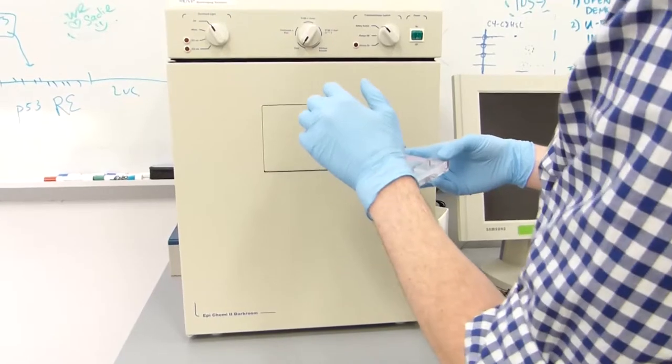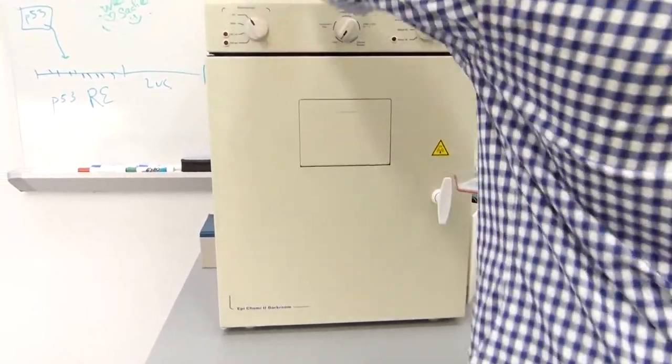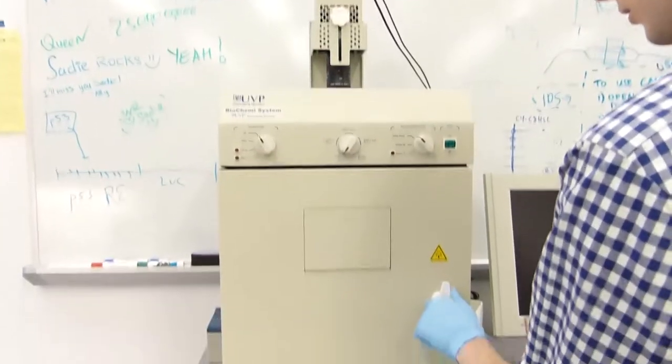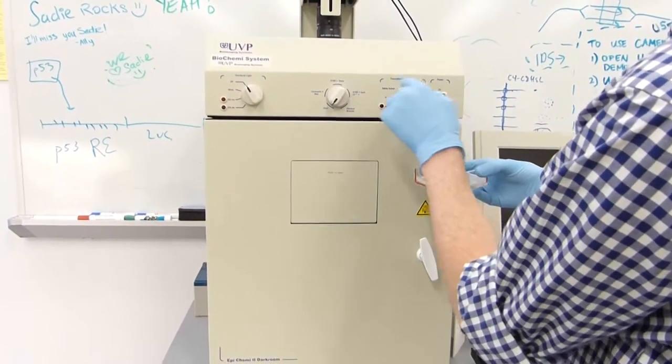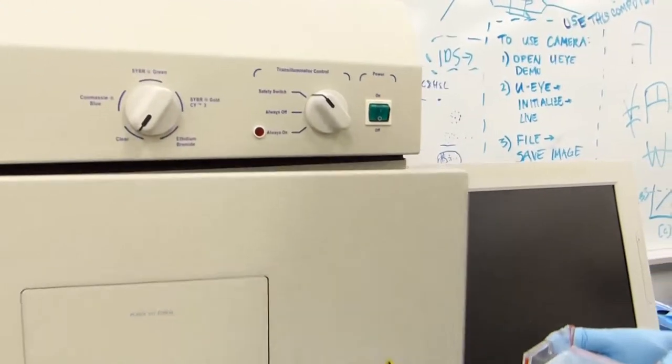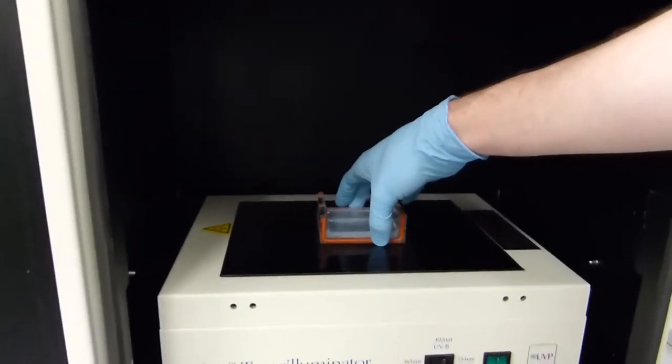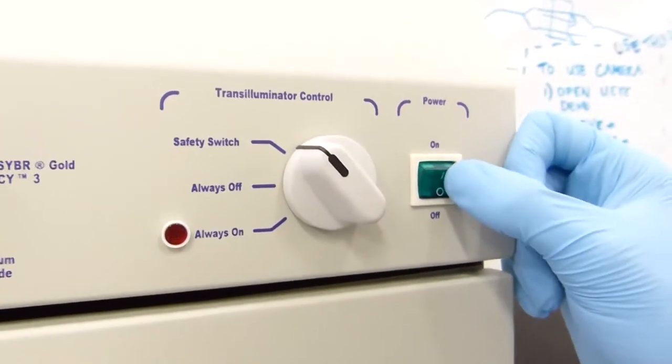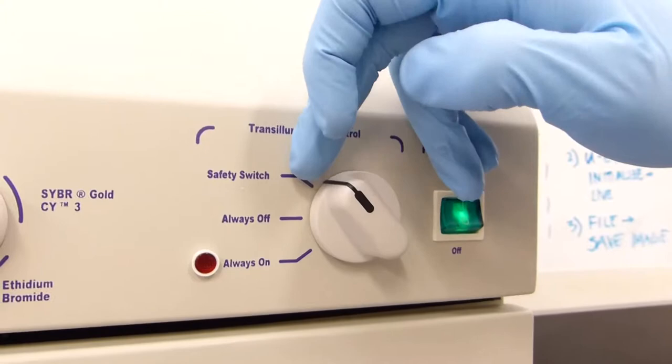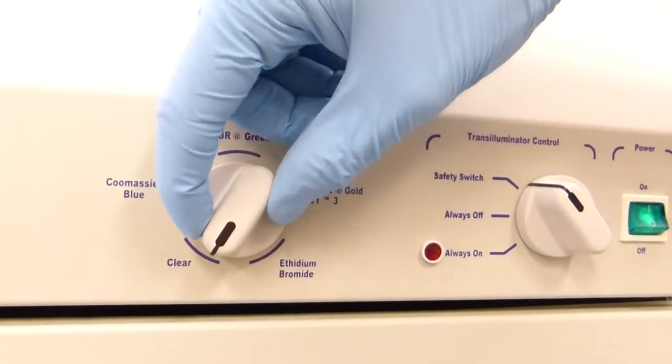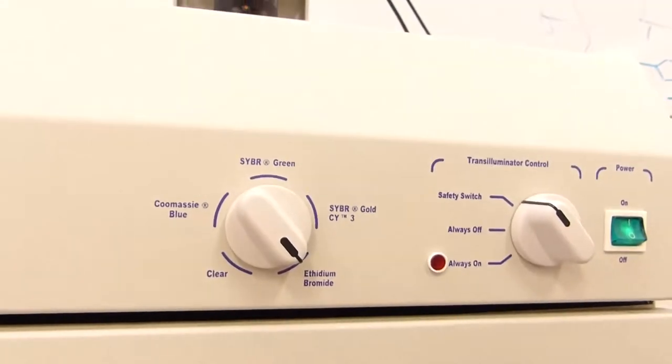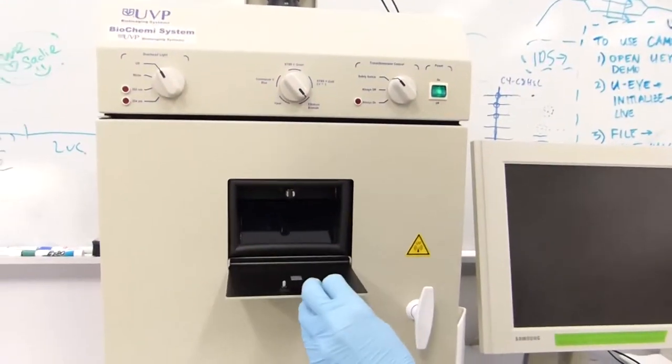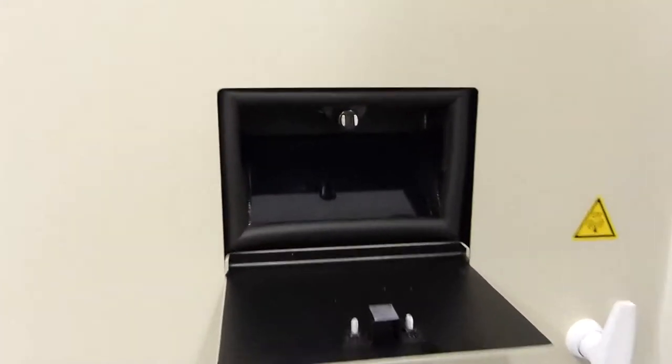We now move over to the UVP fluorescence box to image the gel. First, you turn on the switch at the top of the box and then open the box ensuring that this switch is off and this is on either safety switch or always off. You can then place the gel inside of the box, placing it somewhere near the center and rather even for imaging purposes. You can then shut the box, making sure to close the switch all the way and flip this switch to on. It is acceptable to leave this on safety switch and you want to make sure that this setting is on ethidium bromide as that is what we are using to image the gel.